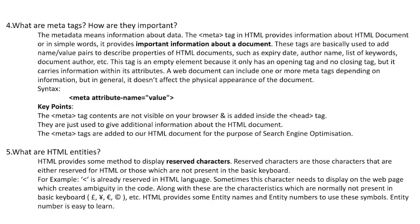Question 4: What are meta tags and how are they important? Metadata means information about data. The meta tag in HTML provides information about the HTML document — in simple words, it provides important information about a document. These tags are used to add name/value pairs to describe properties of HTML documents, such as expiry date, author name, list of keywords, document author, etc. This tag is an empty element because it only has an opening tag and no closing tag, but it carries information within its attributes. A web document can include one or more meta tags depending on information, but in general it doesn't affect the physical appearance of the document.